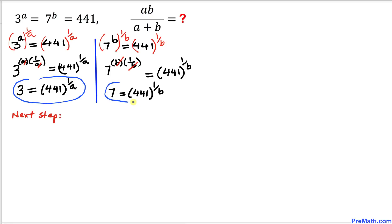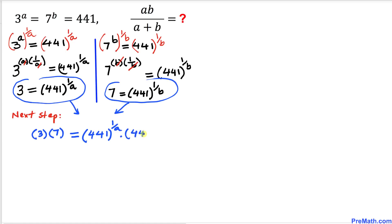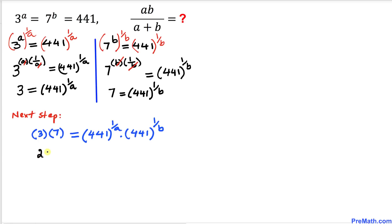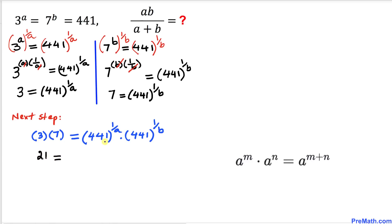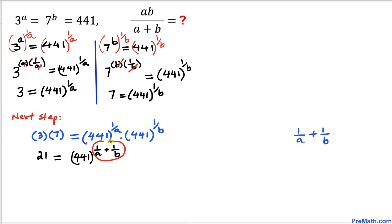In the next step I take these two equations and multiply them together. On the left hand side 3 times 7 gives 21, and on the right hand side, using the rule of exponents, 441^(1/a) times 441^(1/b) equals 441^(1/a + 1/b).